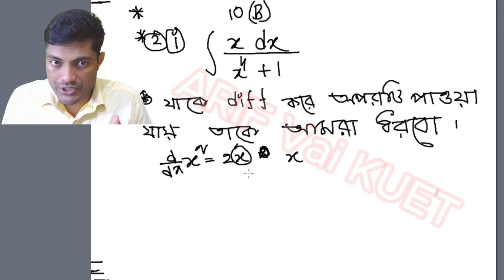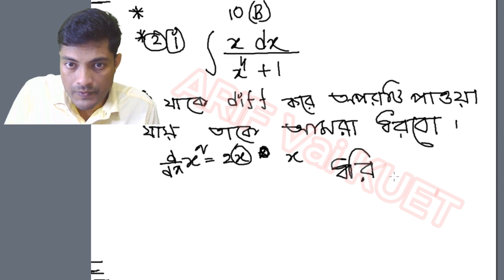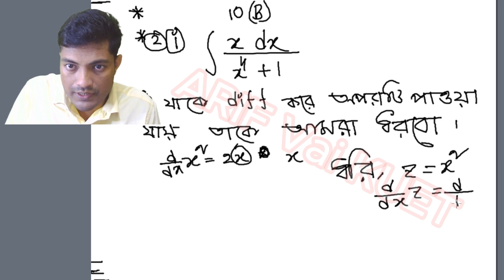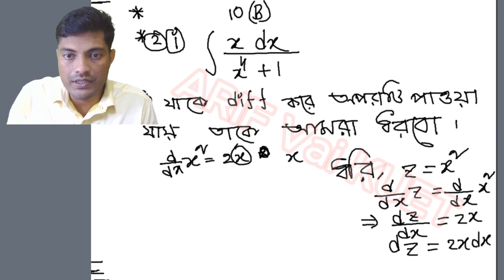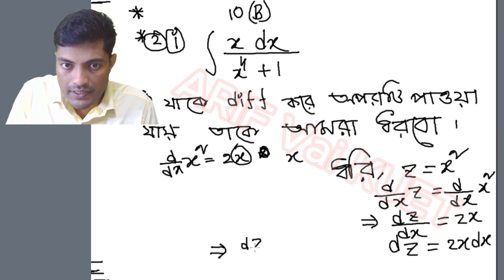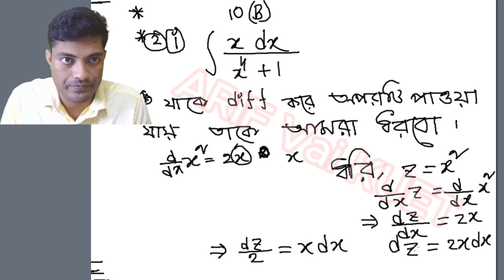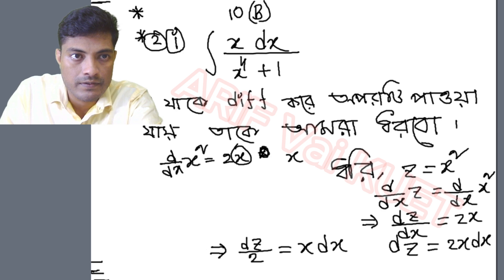If z is equal to x squared, we can differentiate here. The derivative d/dx of z equals d/dx of x squared. Then dz/dx equals 2x, so dz is equal to 2x dx. Therefore, x dx equals dz divided by 2.